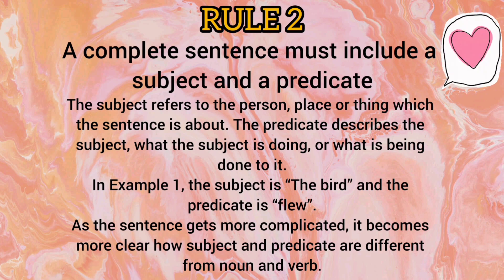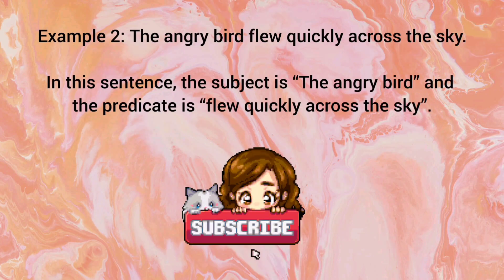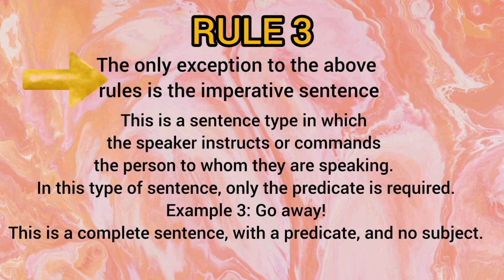Rule number 2: A complete sentence must include a subject and a predicate. The subject refers to the person, place or thing the sentence is about, and the predicate describes the subject — what the subject is doing or what is being done to it. For example, in 'The angry bird flew quickly across the sky,' the subject is 'angry bird' and the predicate is 'flew quickly.'